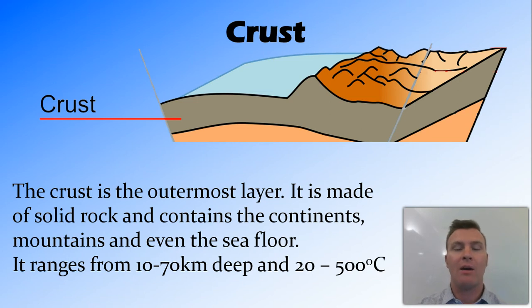So it ranges across the world about how thick it is. Under the sea floor, it's only 10 kilometers thick. While under the big continental areas, it can get down to about 70 kilometers thick. And it's 20 degrees at the top and gets hotter as it goes down to about 500 degrees at the bottom of the crust. And you'll see that trend of getting hotter the deeper it goes down continue all the way to the center.